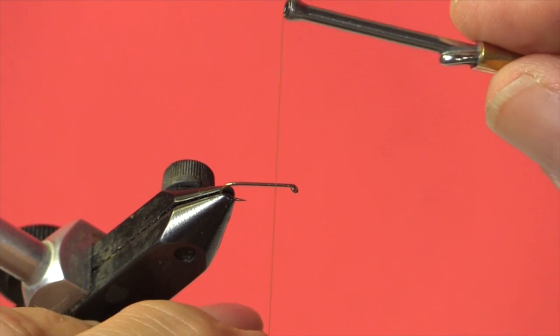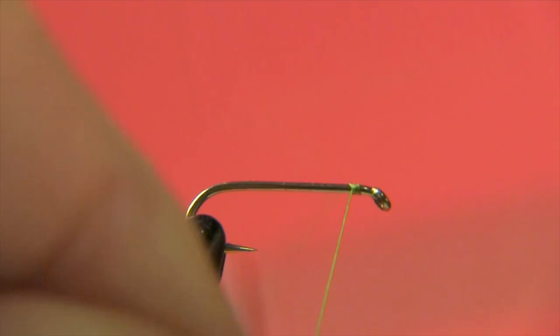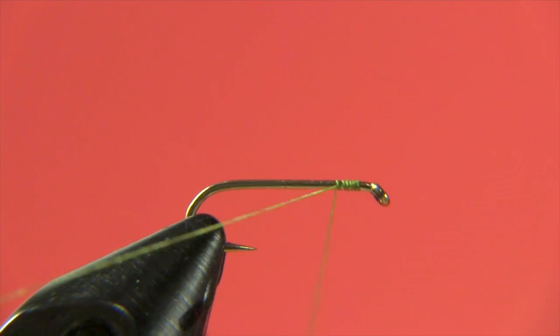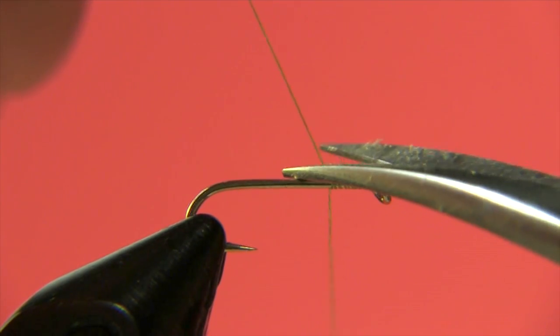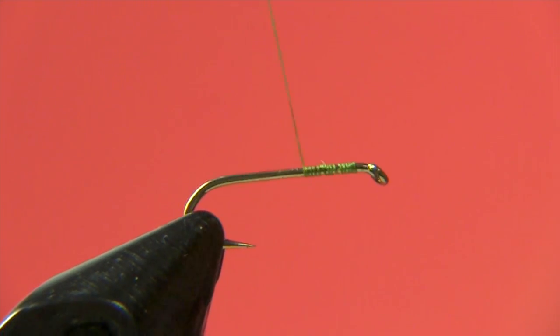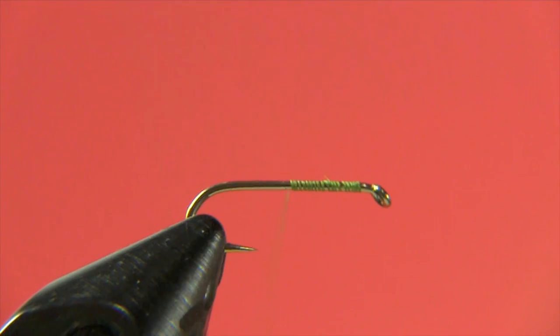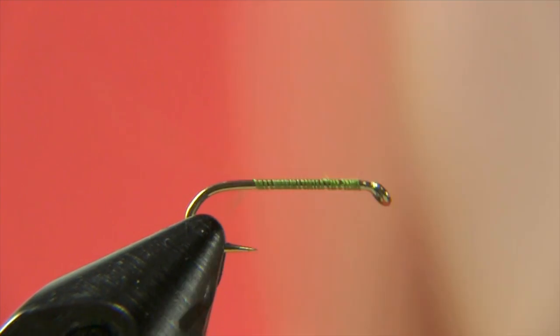Let's start off by tying on our thread. Start just behind the eye of the hook. Cut the tag off. Now we're going to continue winding back. I'm going to lay a base of thread on the shank of the hook. That's going to help keep our wing from slipping around.